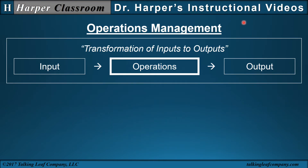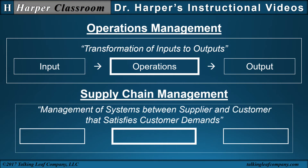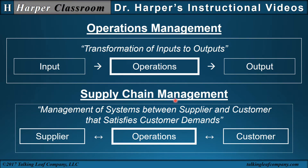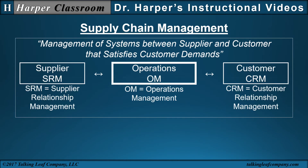Comparing operations with supply chain management, the description becomes management of systems between supplier and customer that satisfies customer demands. Where the input is changed to supplier and the output is changed to customer, because supply chain management manages systems upstream and downstream. Since it manages systems, it will consider supplier relationship management and customer relationship management along with operations management.